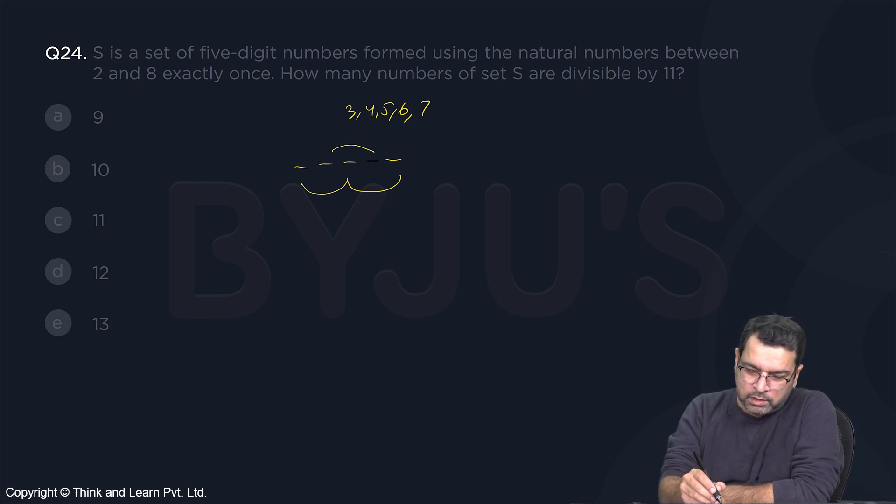So if I say the sum of three positions is A and the sum of two positions is B, then A minus B should be 0, 11, or 22.